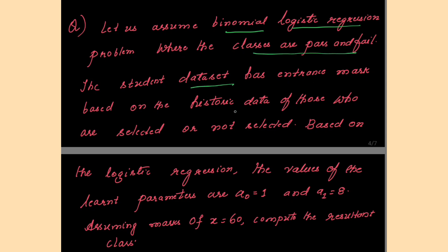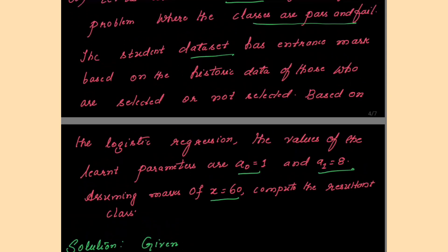The student dataset has entrance marks based on historic data of those selected or not selected. Based on logistic regression, the learned parameter values are a0 = 1 and a1 = 8. Assuming marks of x = 60, compute the result in class. Note: in previous regression problems you computed a0 and a1 yourself, but here in logistic regression the values for a0 and a1 are given in the problem statement. The procedure to compute these parameters is called Maximum Likelihood Estimation.